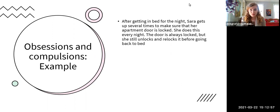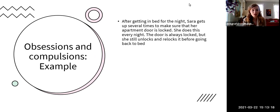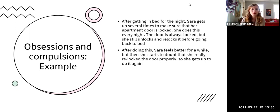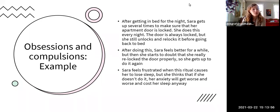As an example of how obsessions and compulsions interact, consider a patient named Sarah who gets up several times every night to check that her apartment door is locked. Every time she checks, it's always locked — she never forgets. But she engages in the ritual of unlocking and relocking the door just so she can know she actually did it. After checking, she feels better for a while, but then starts to doubt again that she really relocked it properly, so she has to do the whole thing over. She feels frustrated because it's causing her to lose sleep, but believes her anxiety would be worse if she stayed in bed with that uncertainty.